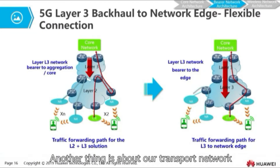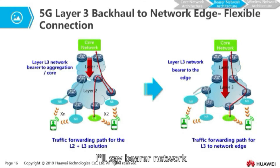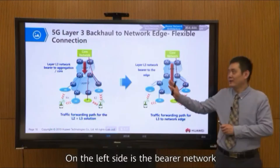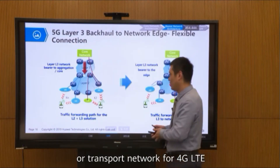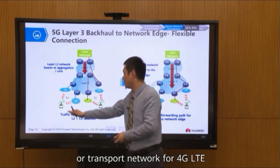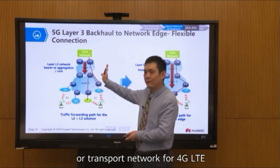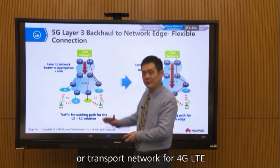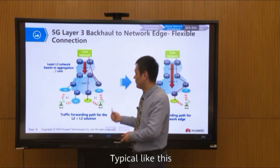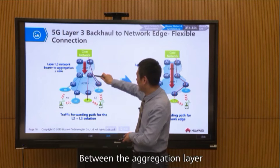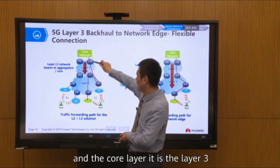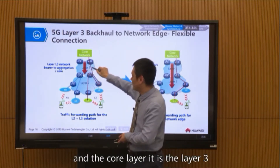Another thing is about our transport network, or bearer network. On the left side is the bearer network or transport network for the 4G LTE, typical. Between the aggregation layer and the core layer, it is Layer 3.